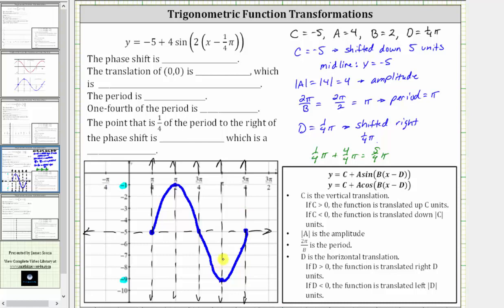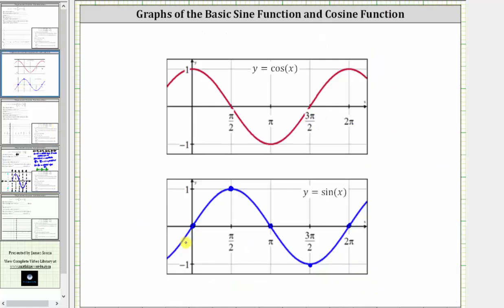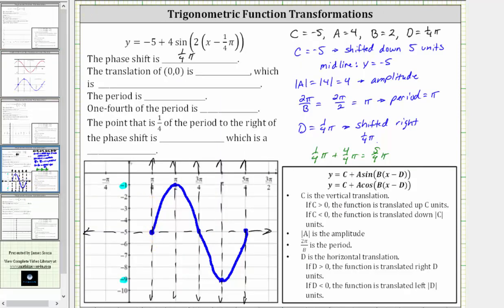Let's complete the statements above. The phase shift, or horizontal shift, is right one-fourth pi radians. Here we just enter the value of D, which is positive one-fourth pi radians, or pi over four radians. Because it's positive, we know the shift is right. Next, the translation of the ordered pair zero comma zero is the point one-fourth pi comma negative five, which we can also write as pi over four comma negative five. This point corresponds to the point zero comma zero on the basic sine function, and notice how this is on the midline.